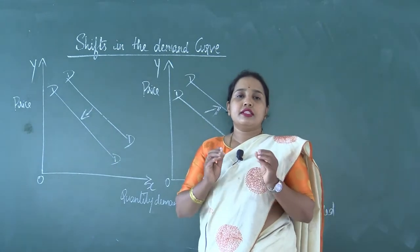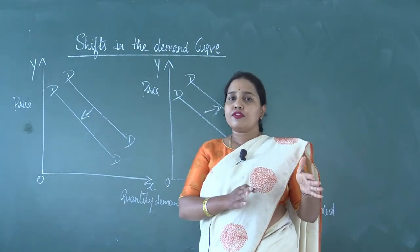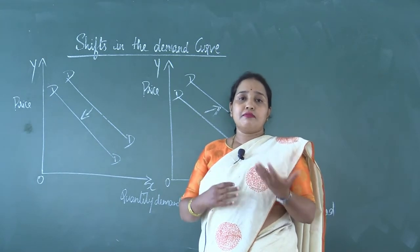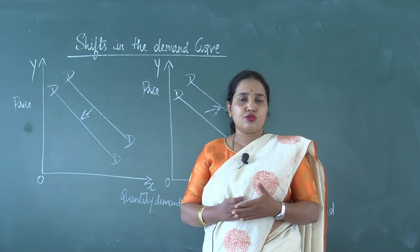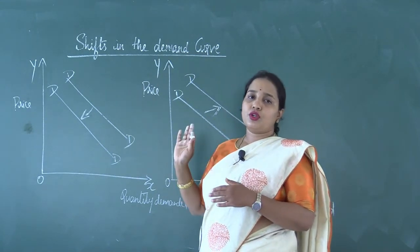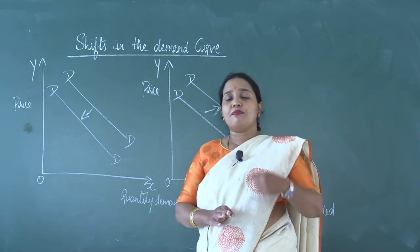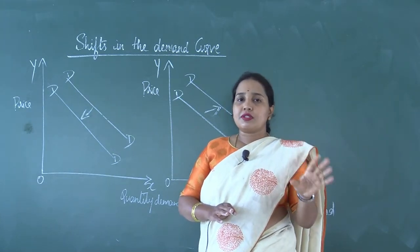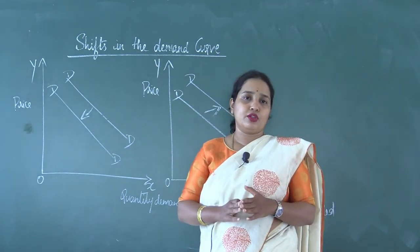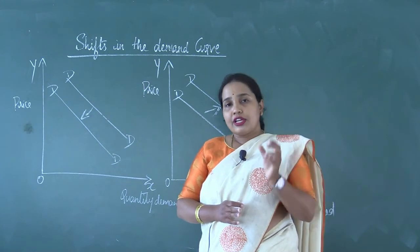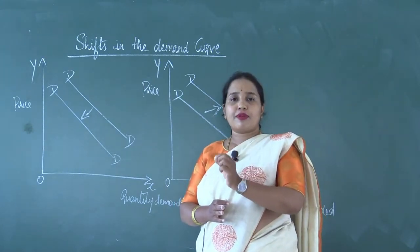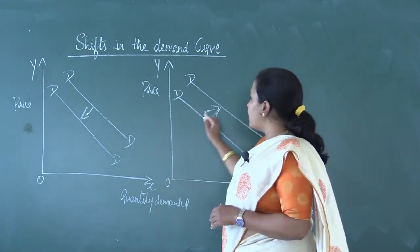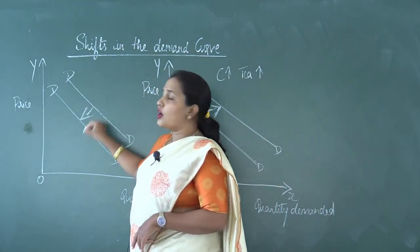Now let us consider another determinant: price of related goods. Keeping the income of the consumer and taste and preferences constant, what happens to the demand curve whenever there is a change in the prices of related goods? Obviously it takes a shift rightward or leftward. When we concentrate on prices of related goods, it depends upon the nature of goods — we come across two categories: one is substitute goods and the other is complementary goods. Whenever there is an increase in the price of related goods, the demand for a good at each level of prices changes, and hence there is a shift in the demand curve. For substitute goods, the demand curve shifts rightward.